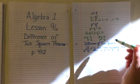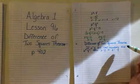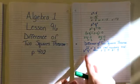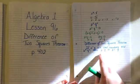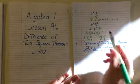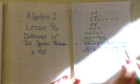So this leads us to the difference of two squares theorem. If p and q are real numbers and p squared equals q squared, then p equals q or p equals negative q, which is what we said right here.